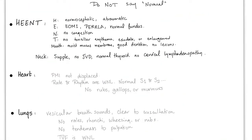For physical exam notes, do not use the word 'normal' — instead use specific descriptors. HEENT: head is normocephalic, atraumatic. Eyes: EOMI (extraocular muscles intact); PERLA — pupils are equal, round, reactive to light and accommodation; normal fundus. Nose: no congestion. Throat: no tonsillar enlargement or erythematous exudate. Mouth: moist mucous membranes, good dentition, no lesions. Neck: supple, no jugular venous distension, normal thyroid, no cervical lymphadenopathy. Heart: PMI not displaced, rate and rhythm within normal limits, normal S1 S2, no rubs, gallops, or murmurs. Lungs: vesicular breath sounds, clear to auscultation, no rales, ronchi, wheezing, or rubs, no tenderness to palpation, TVF within normal limits.